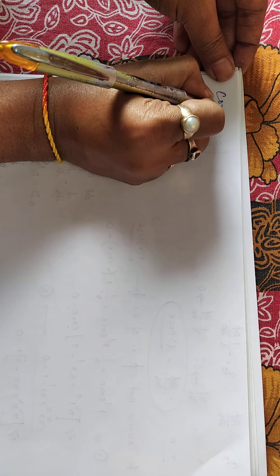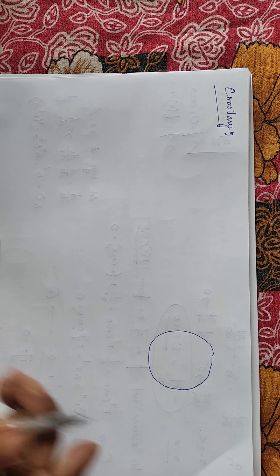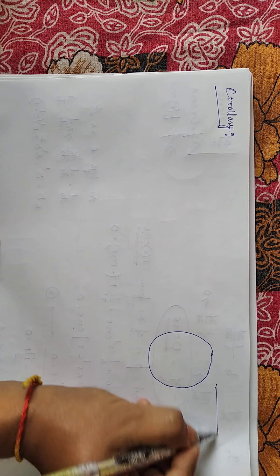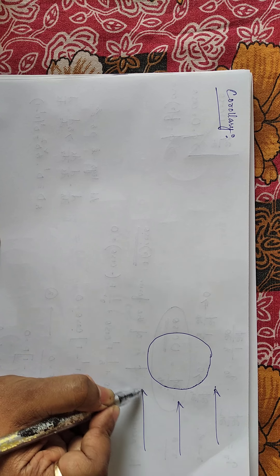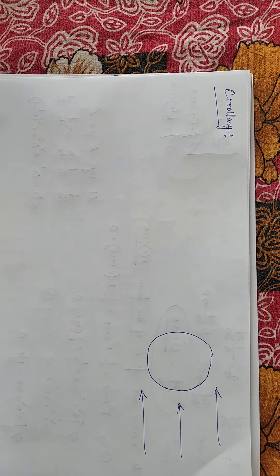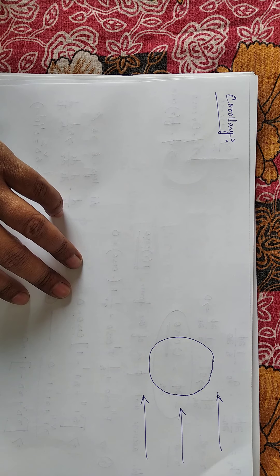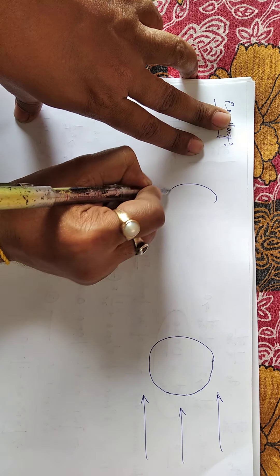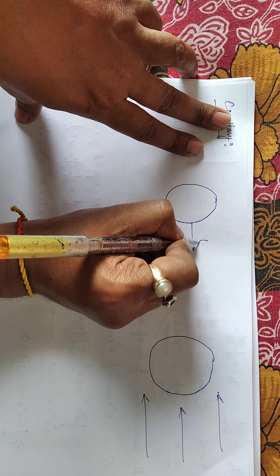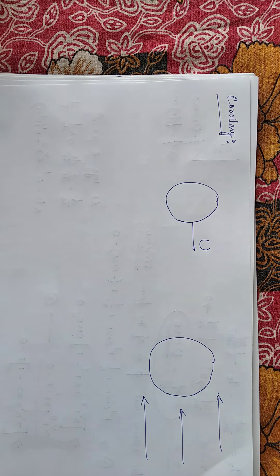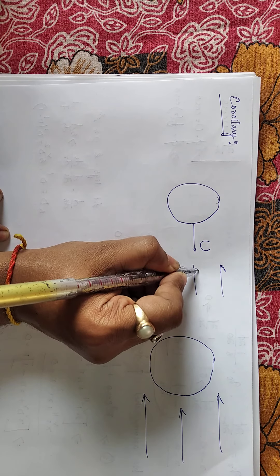Now we do a corollary. Let us consider the case where the cylinder is at rest but the surrounding liquids are moving. Notice the difference from the first case: previously the cylinder was moving, but now the cylinder is at rest while the surrounding liquid moves. We start from the previous case where the cylinder moves with velocity U.